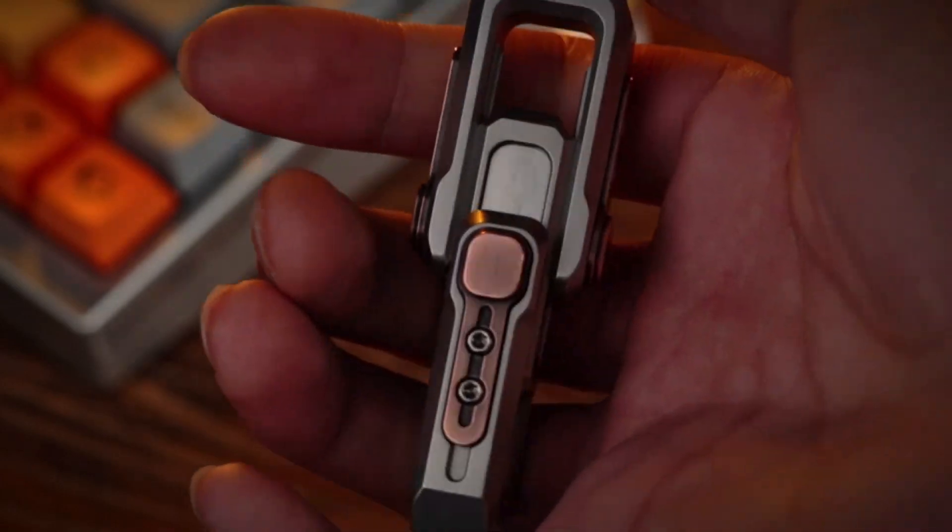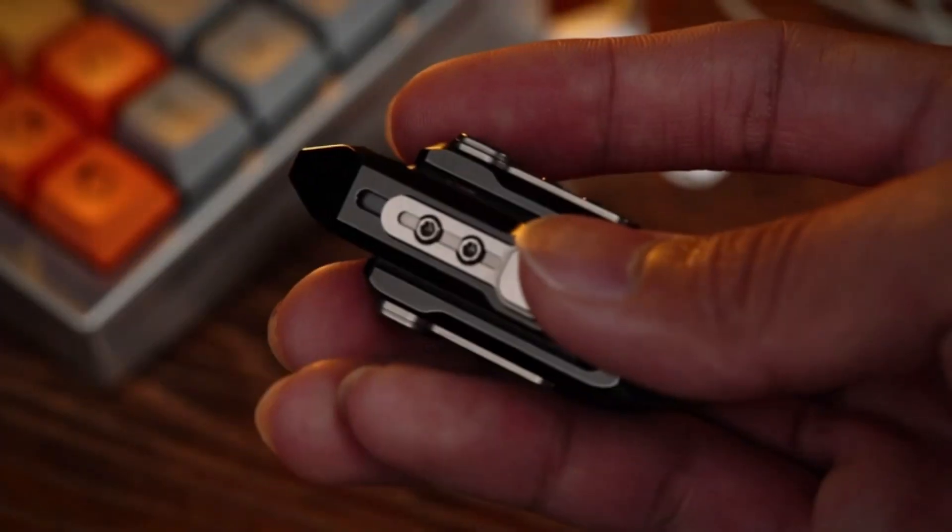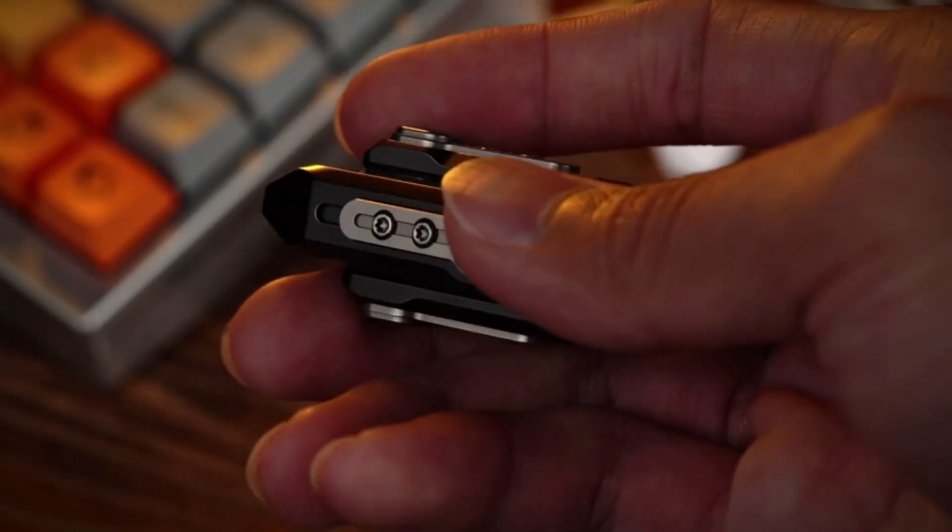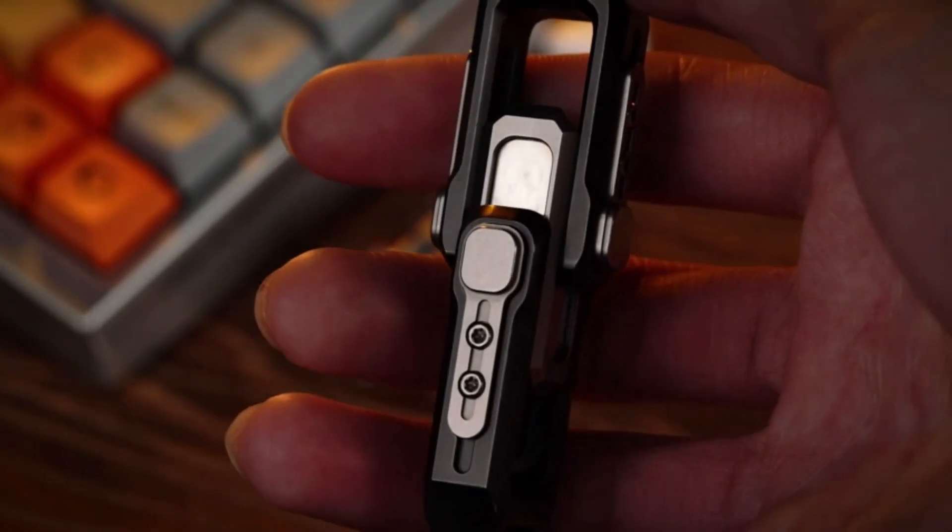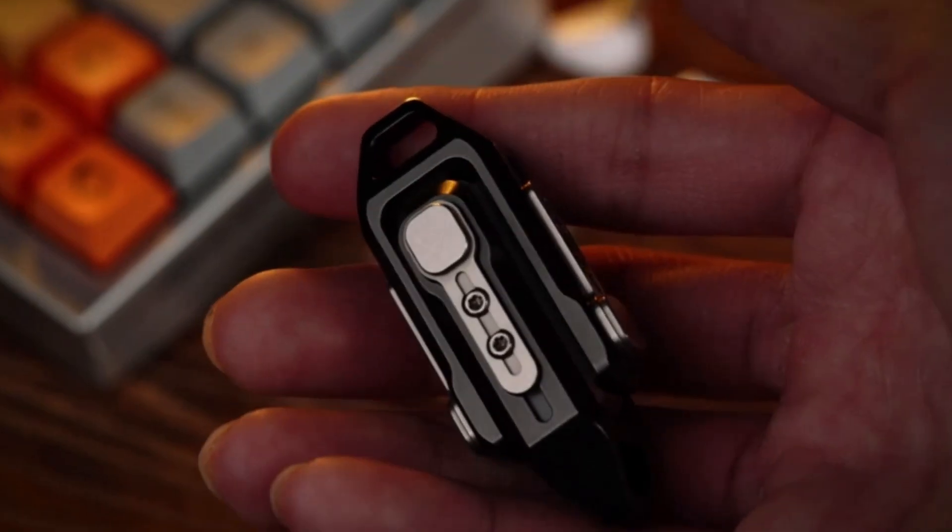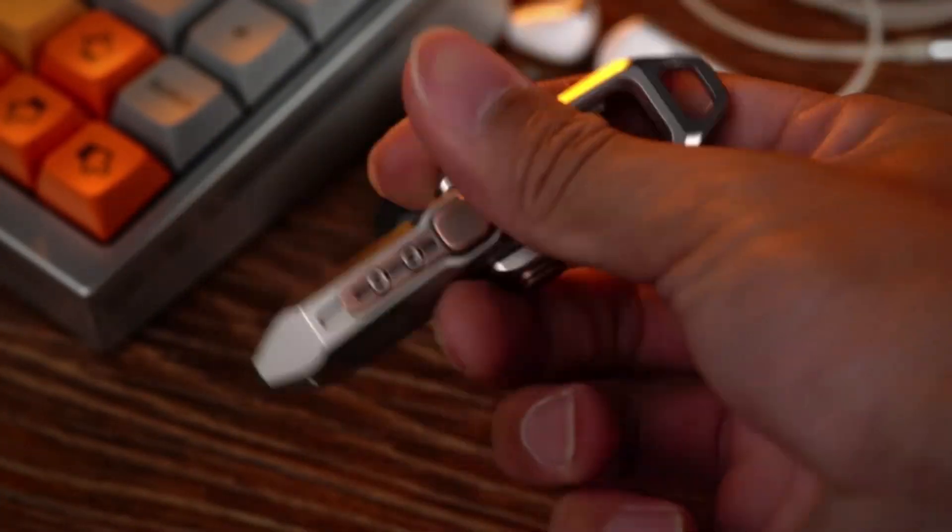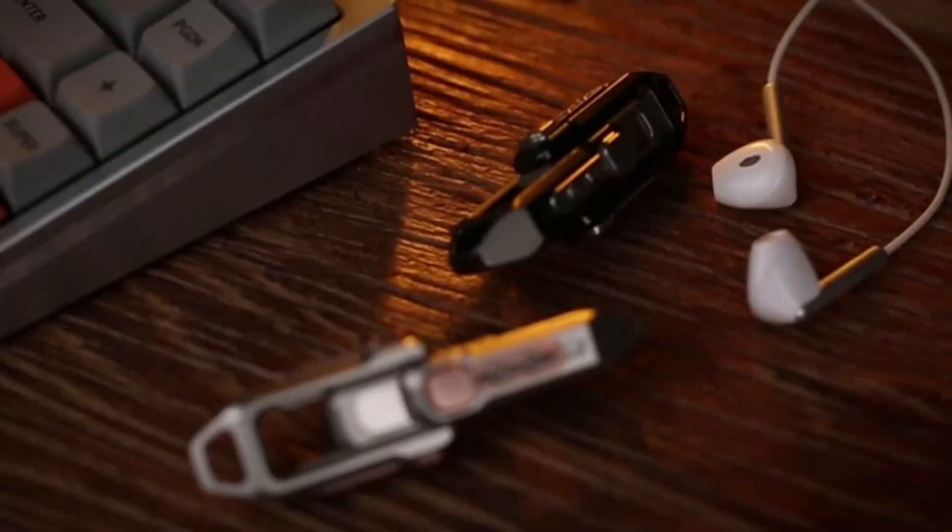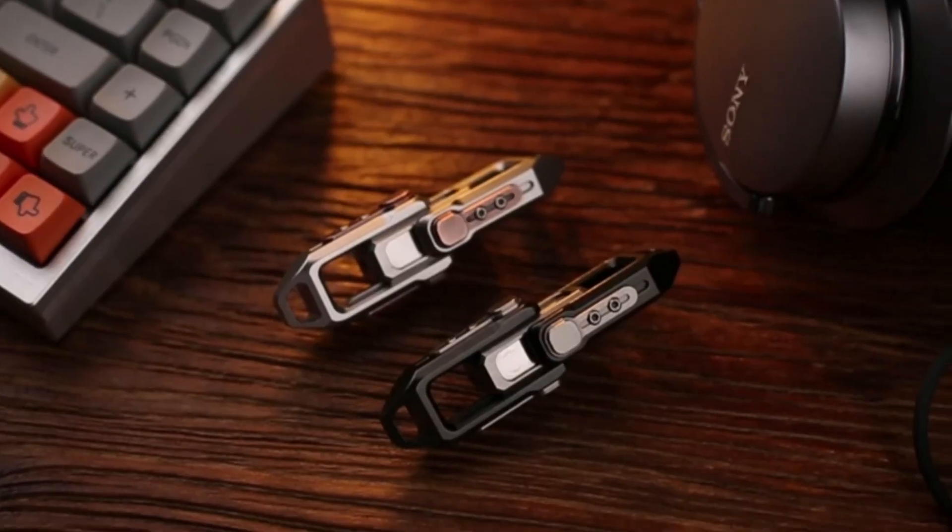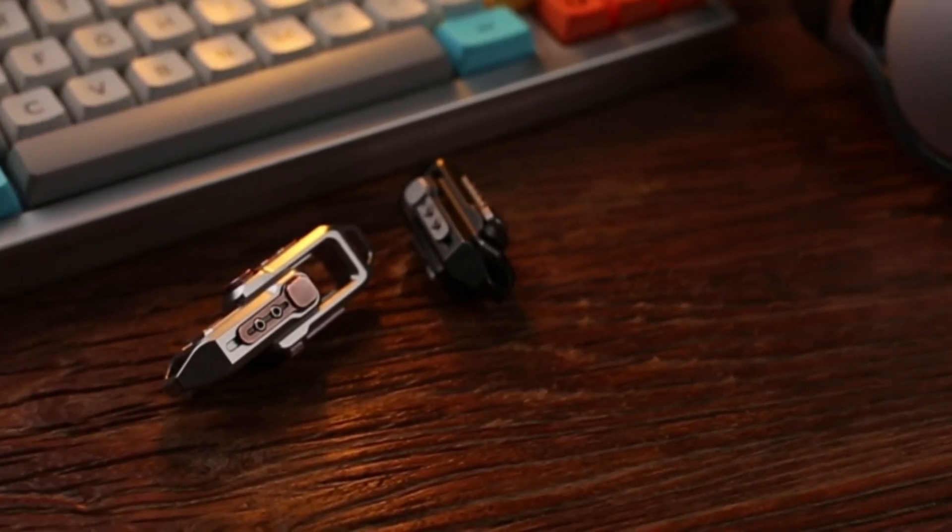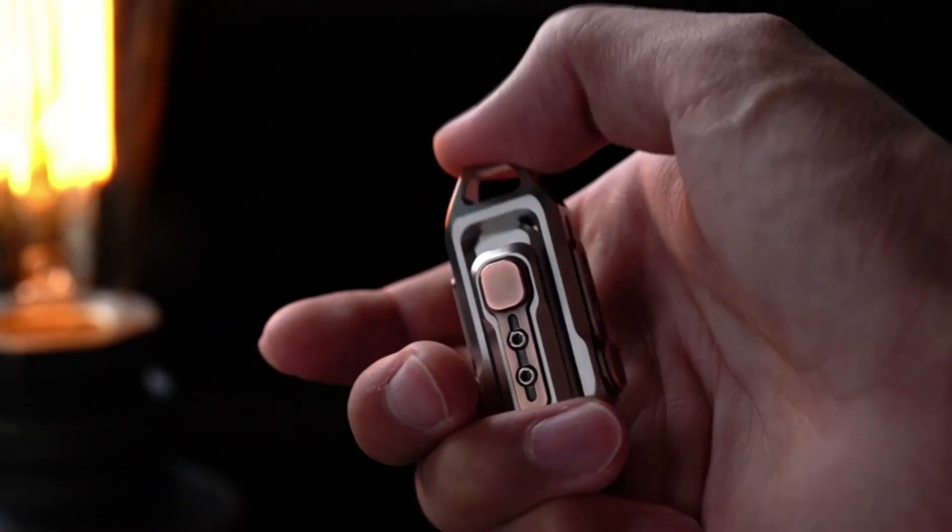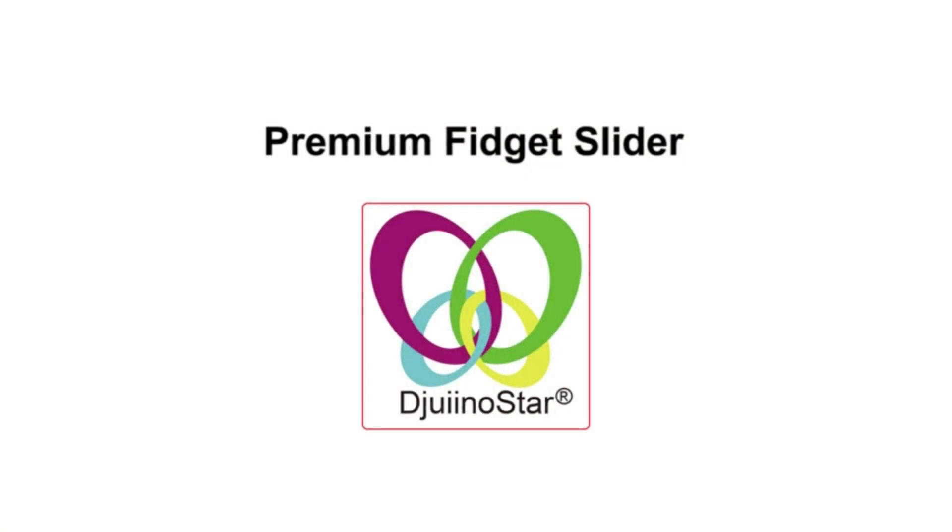The Jui No Star Premium Fidget Slider is more than just a toy, it is a wonderful piece of fidget jewelry. This stainless steel and brass slider is a symbol of luxury and durability. It provides an addictive tactile experience, perfect for occupying your hands and calming your mind. Transform your fidget bar into a unique pendant, allowing you to carry your fidget buddy with you wherever you go, whether you're at work, in a meeting, or simply relaxing. The Jui No Star Premium Fidget Slider is here to enhance your experience.